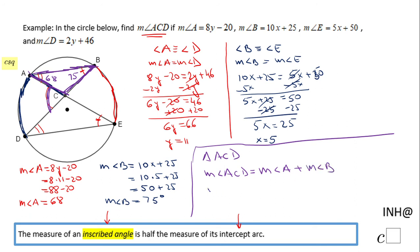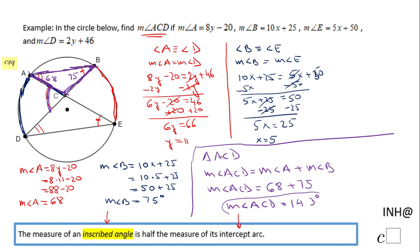Therefore, the measure of angle ACD equals 68 plus 75, which is 143 degrees. If you enjoyed this video, don't forget to click the like button and come back for more help. Thank you, see you next time.